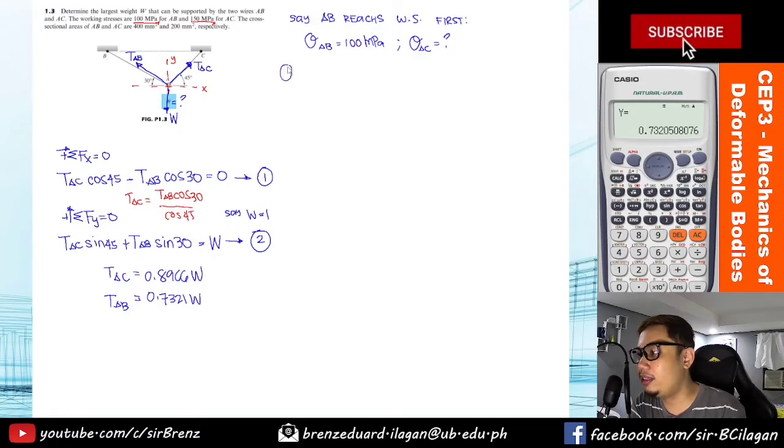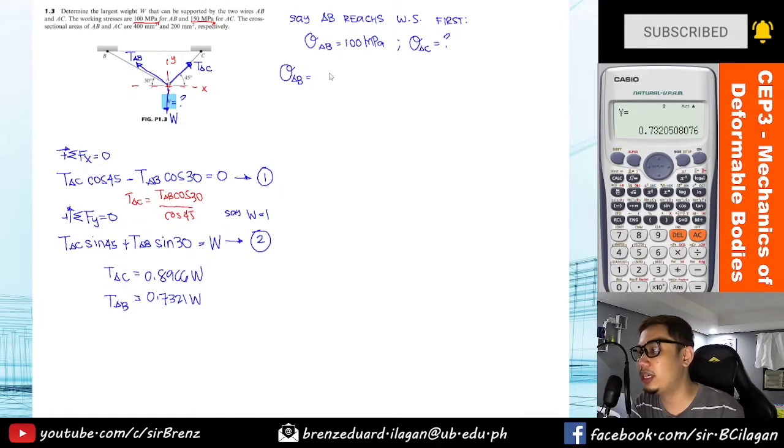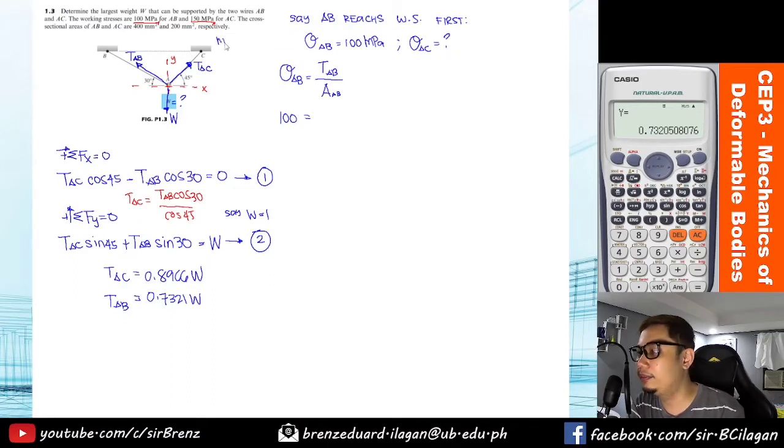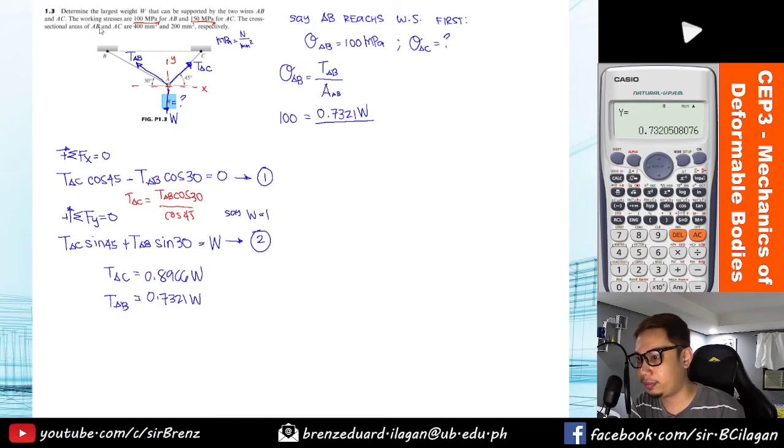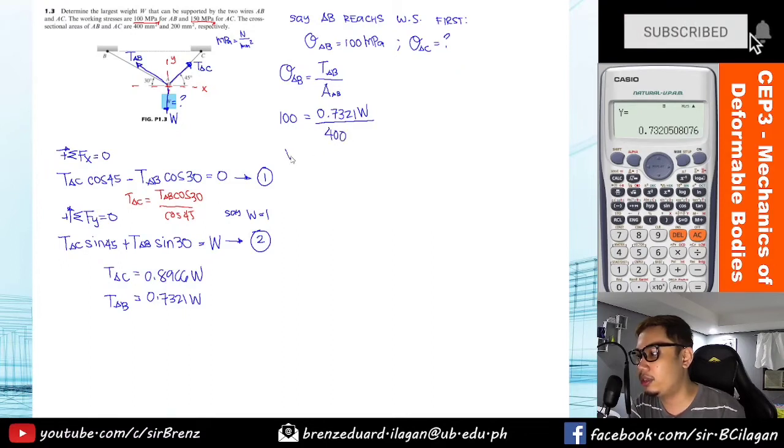Again, stress equals P, or for this example the P or force is the tension at AB over the area of AB. So just substitute the value: 100—I won't write the unit yet guys, just remember that when it's megapascal, the units should be in terms of Newton per mm squared. So the value of W we get here is in terms of Newtons because our area is in mm. So TAB, which is AB in terms of W, is 0.7321W, over area of AB. Look carefully, AB came first so it's the 400.